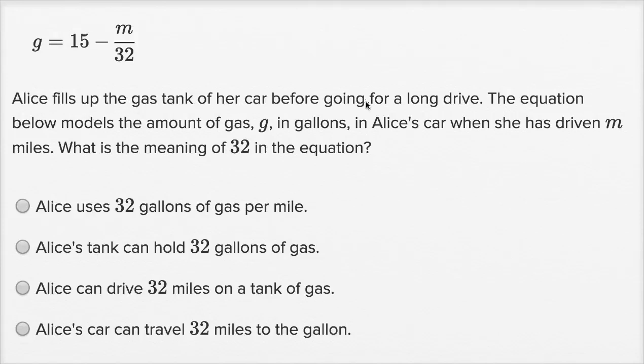Alice fills up the gas tank of her car before going for a long drive. The equation above models the amount of gas, g, in gallons in Alice's car when she has driven m miles. What is the meaning of 32 in the equation?